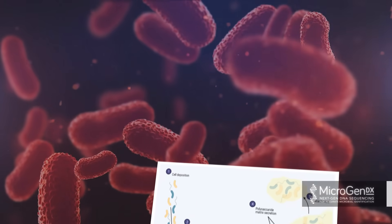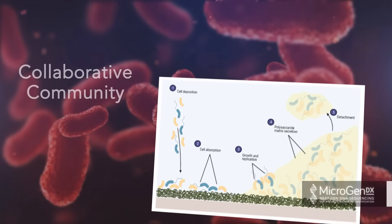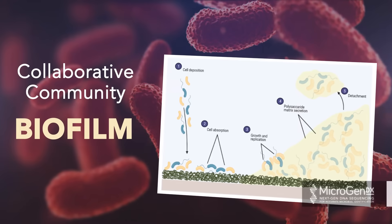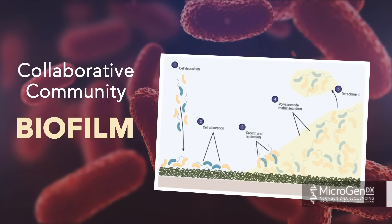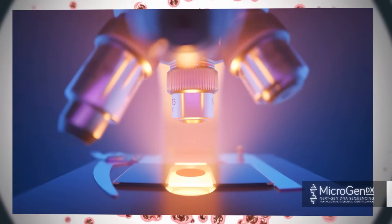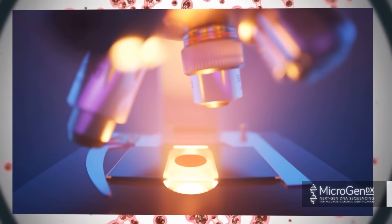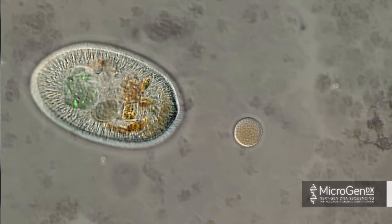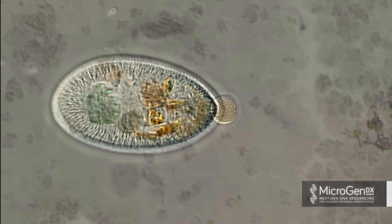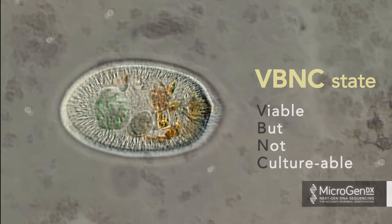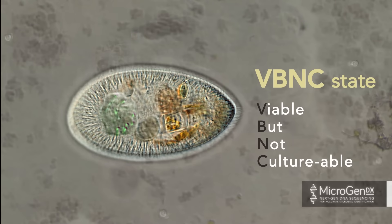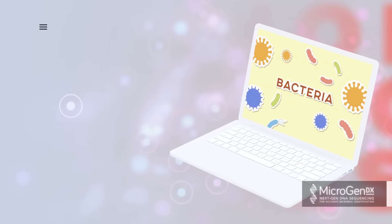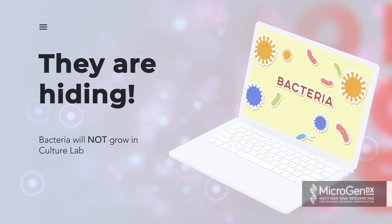In chronic infections, the bacteria and fungus will form a collaborative community or biofilm. This means the microbes will form a wall or matrix to protect themselves and are more difficult to eradicate. The biofilm can form on any host tissue or implant within your body. Bacteria have been around for billions of years and have adapted. They can go into a VBNC state — viable but not culturable — simply going into hibernation and will not grow in the culture lab. They are hiding, resulting in you not getting the right antibiotic.